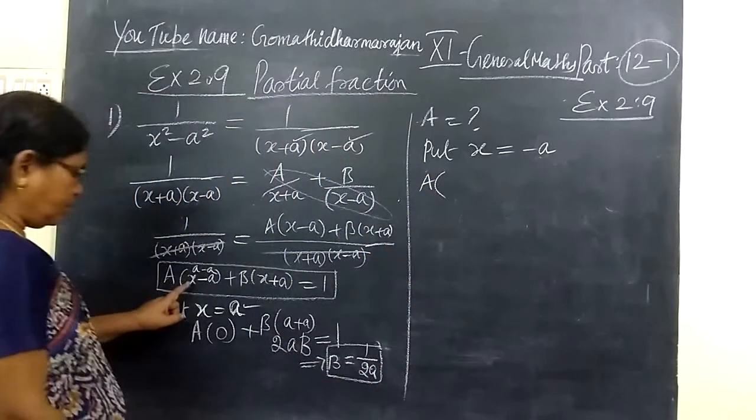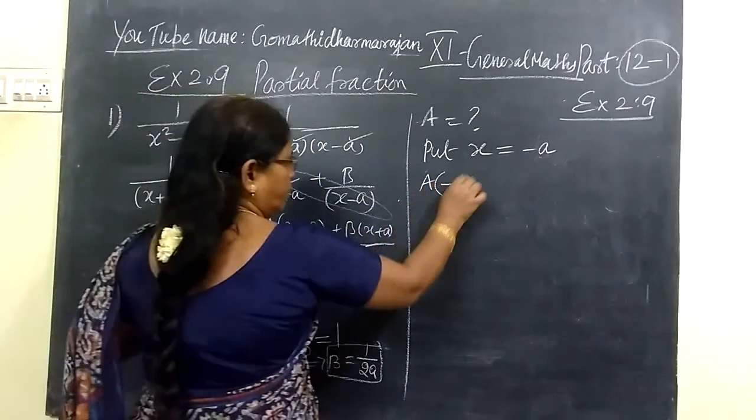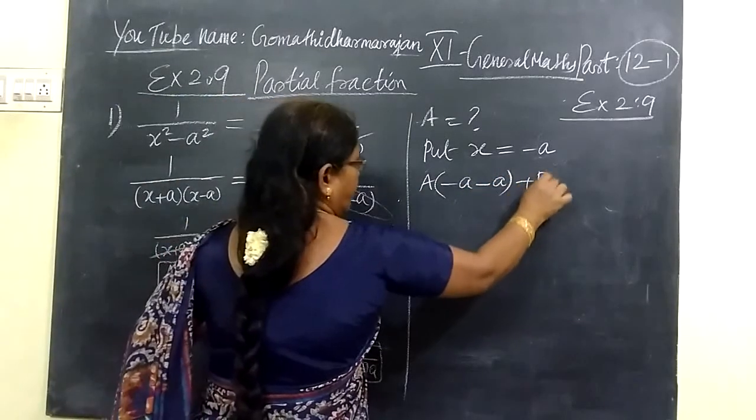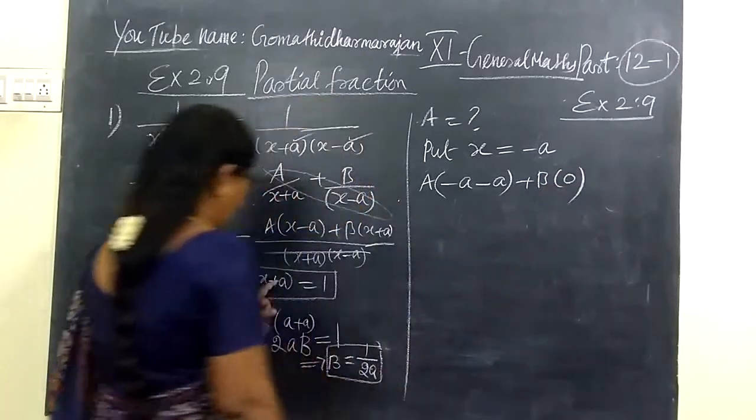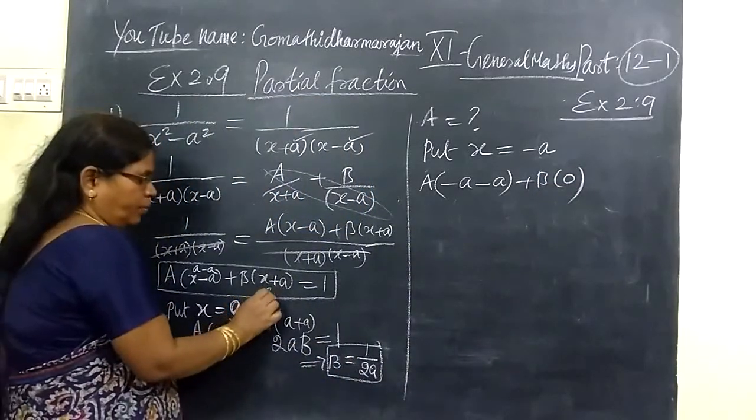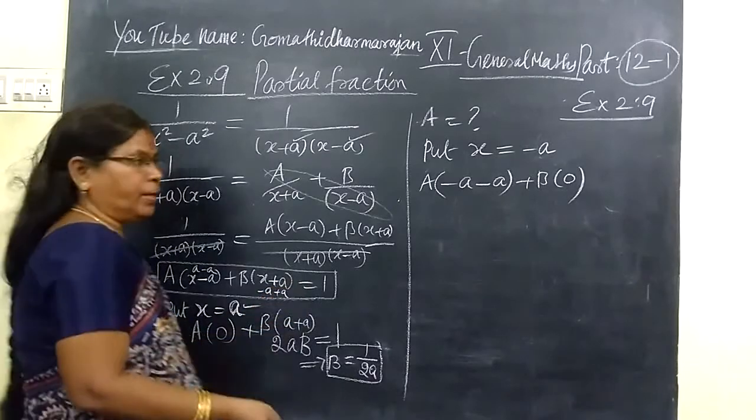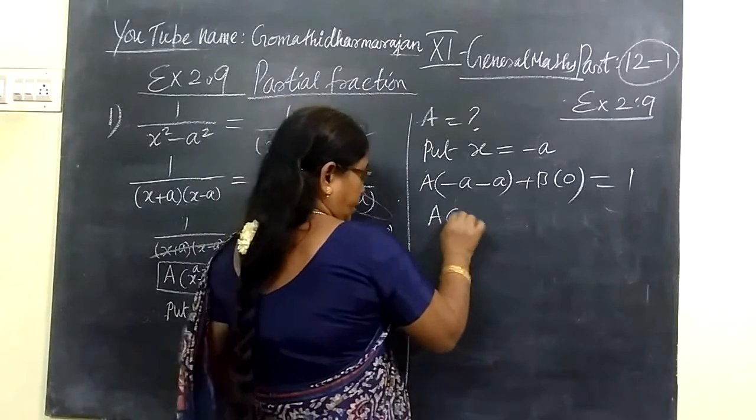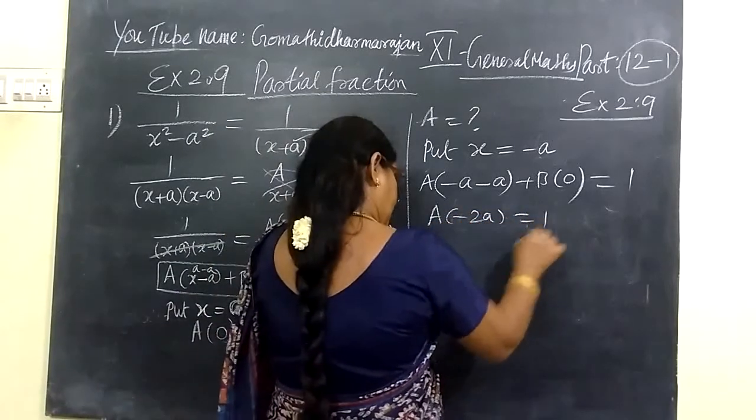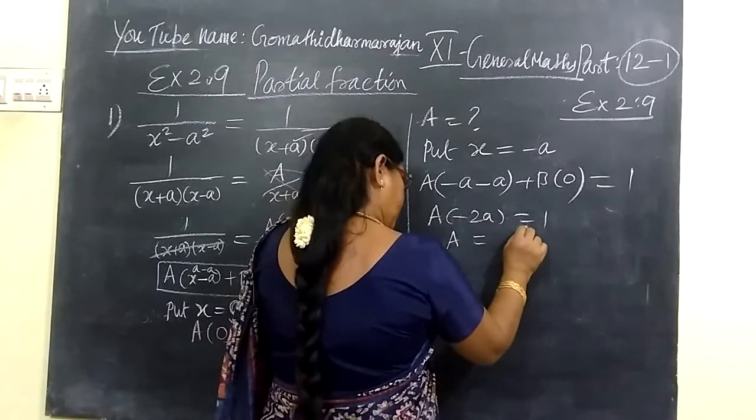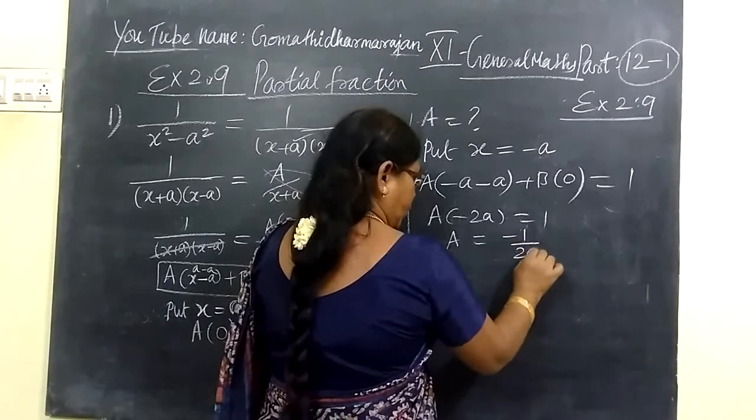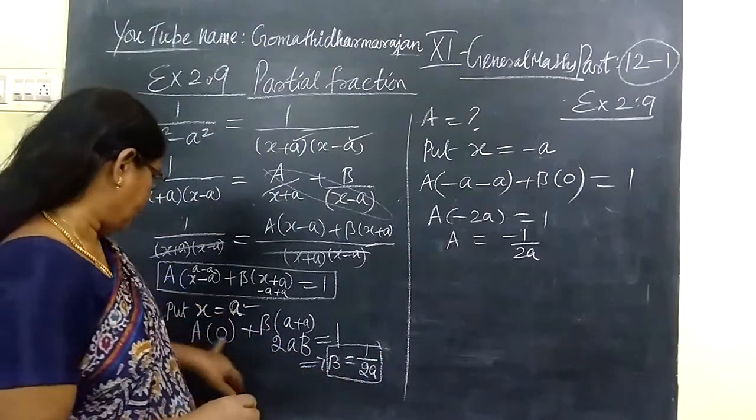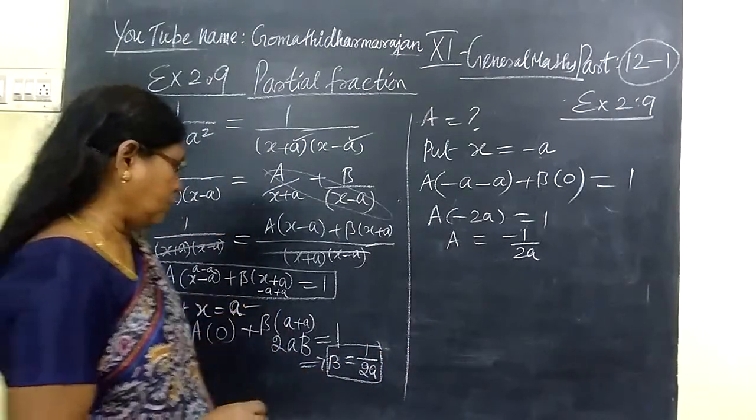A right here, this is x plus A. So A(minus A plus A). So A times 2A equals to 1. So A equals to 1 by 2A. Any A will come.